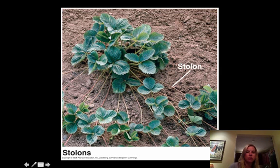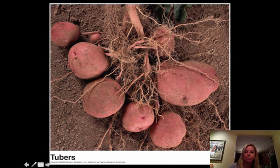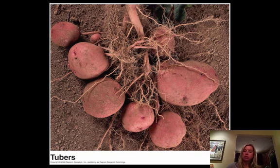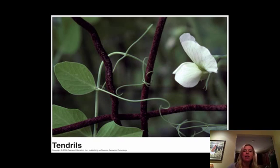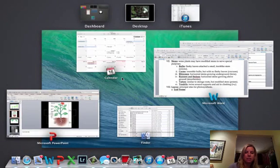Then we have runners and stolons, which is like a strawberry plant — they're horizontal above the soil, just like a rhizome but above ground instead. Then you've got tubers, which are almost like a storage stem — certain types of potatoes are going to be in that category. And then you've got tendrils, which are a way that something can use to climb up, like ivy or sweet peas.